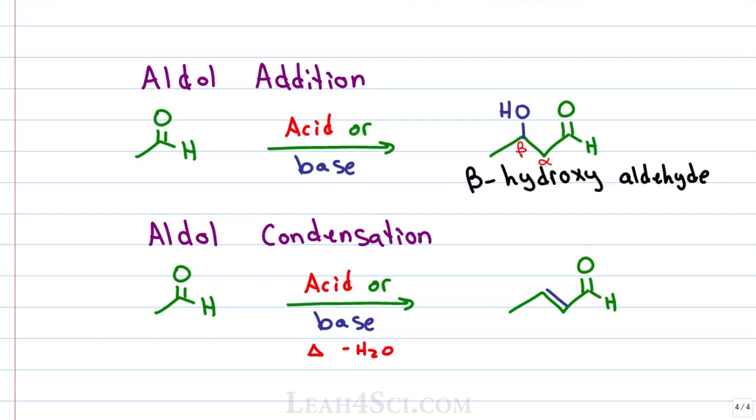In the aldol condensation, the reaction starts out the same way but because we're reacting this at higher temperatures, we have a dehydration at the final step and so the OH is gone with a pi bond sitting between the alpha and beta carbon.